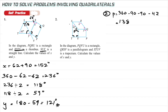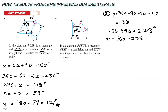Since we also have a 90-degree angle from the rectangle joining here, we add: 138 + 90 = 228. To find X: X = 360 − 228 = 132 degrees. This is X because it equals the corresponding angle at the front.